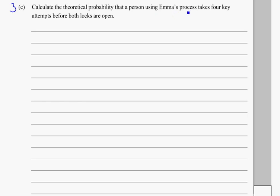So Emma's process, we've assumed here that it's trial and error, and four key attempts before they're open. So I might just diagram for myself this idea that she's got a deadlock and then a door lock. I might call the deadlock option one, and the door lock option two, so she's got to get one and two correct.